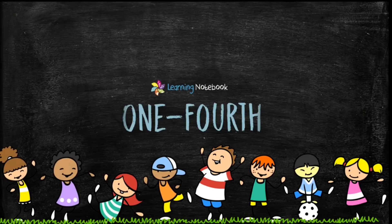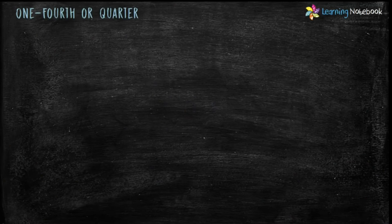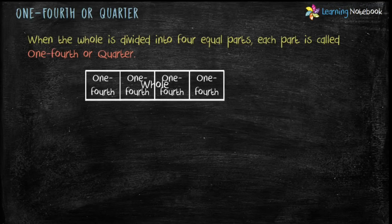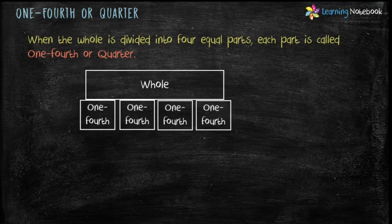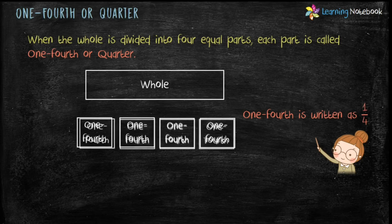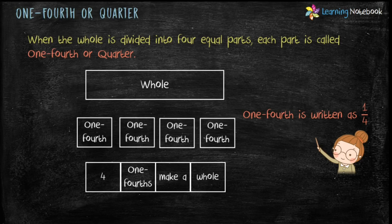Now let's see what is one-fourth. When the whole is divided into four equal parts, each part is called one-fourth or quarter. One-fourth or quarter is written as 1 by 4. Four one-fourths make a whole.